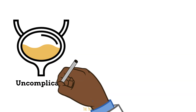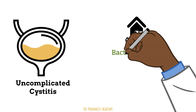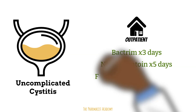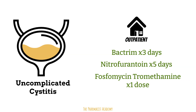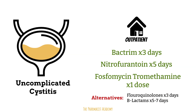For patients with uncomplicated cystitis — those who do not meet any conditions for complicated UTIs — treatment is in the outpatient setting. Options include Bactrim for three days, nitrofurantoin for five days, and a single dose of fosfomycin. Alternatives include fluoroquinolones or beta-lactams.